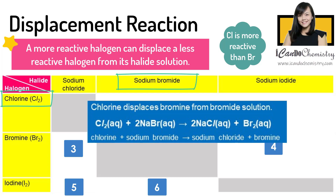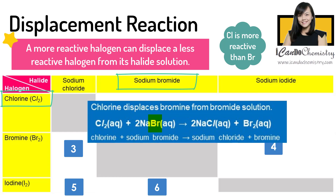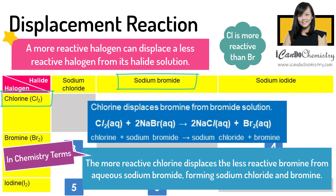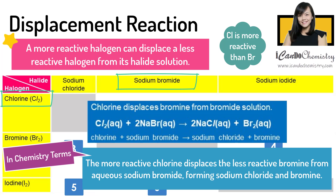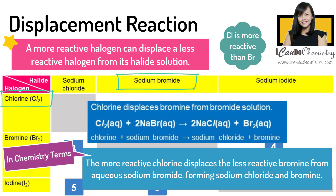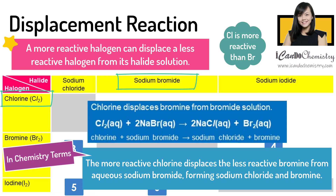So chlorine will take the place of bromine, forming sodium chloride. In chemistry terms, the more reactive chlorine displaces less reactive bromine from aqueous sodium bromide, forming sodium chloride and bromine.